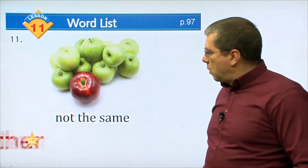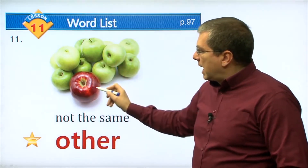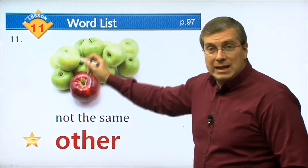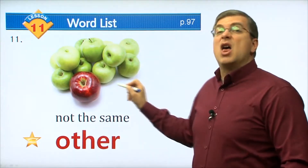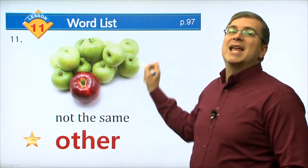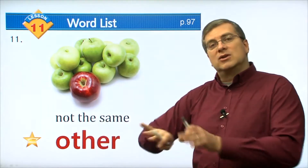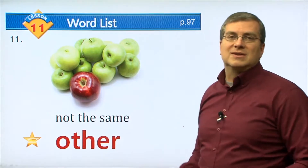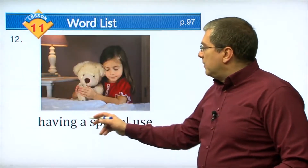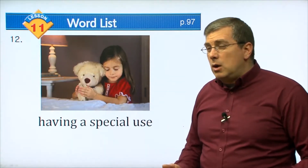Number nine: at a lower place. Here we see a man sitting by a very tall tree. The branches and the leaves are on top. Where is he? He is below — he is below the branches and the leaves. The pen is below my hand. Below means at a lower place.